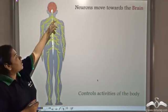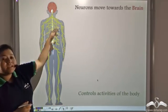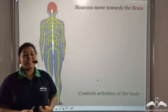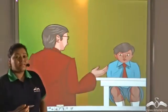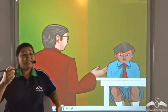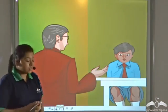Neurons move towards the brain and brain controls activities of the body. Brain does the thinking for us.